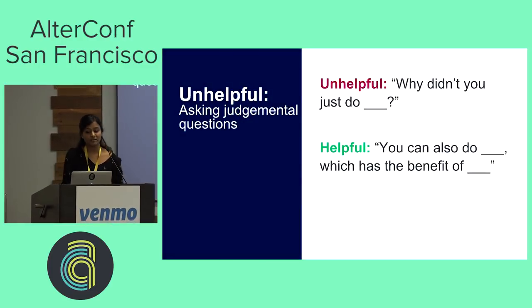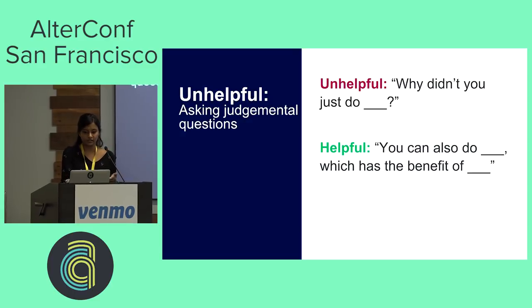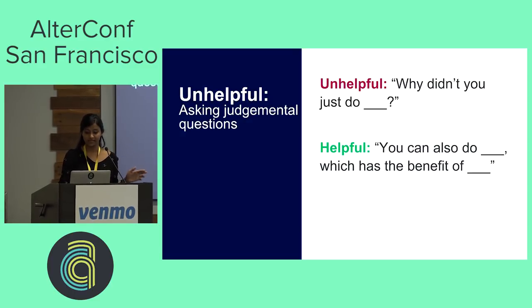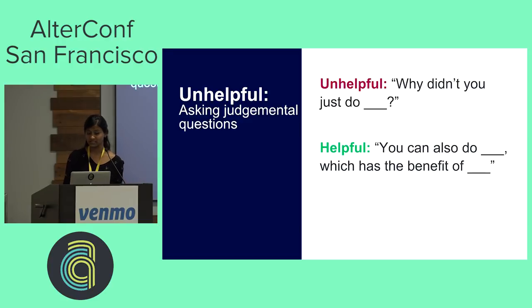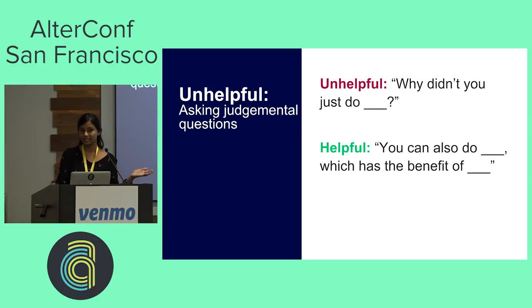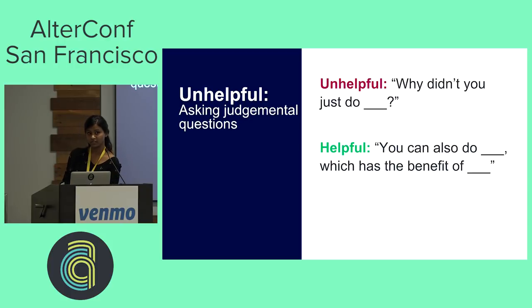I've noticed that judgmental questions come up a lot. Saying something like 'why didn't you just do X' is unhelpful because it implies that a perceived simple solution should have been obvious, and it forces the developer to defend themselves. Instead, you could word it something like 'you could do X, which has the benefit of Y.' This allows you to provide a recommendation without dishing it up with harsh and judgmental words.